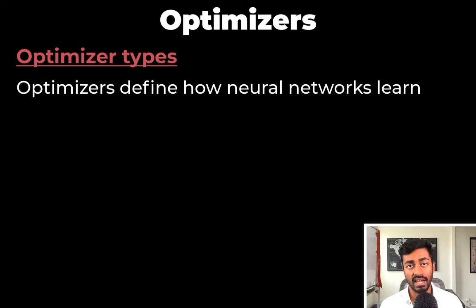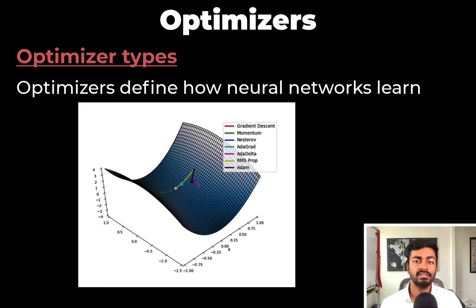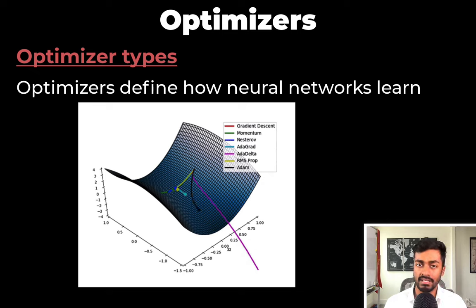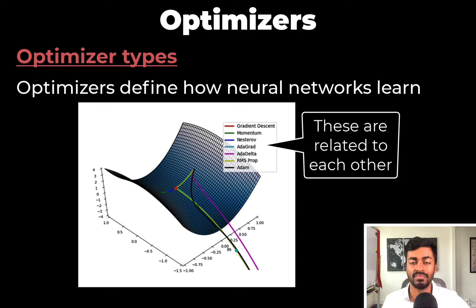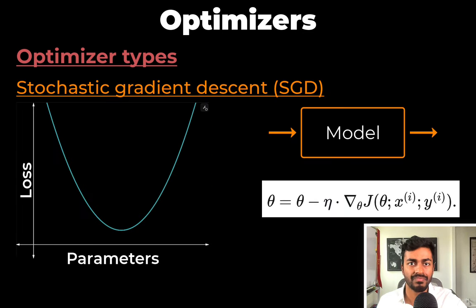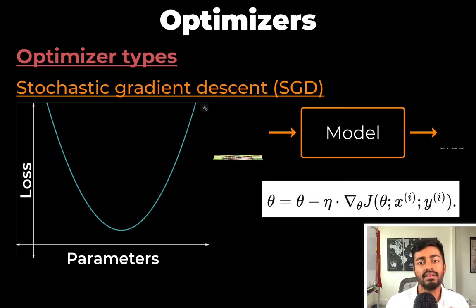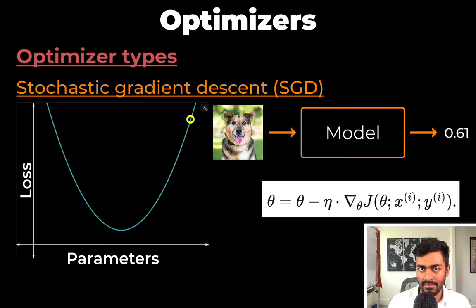Optimizers define how neural networks learn. This here is a non-exhaustive list of optimization algorithms and while it seems that there are so many of them, they're all actually kind of related to each other. So let's talk about each of them briefly. For example, stochastic gradient descent — this is exactly what we described in the previous pass.